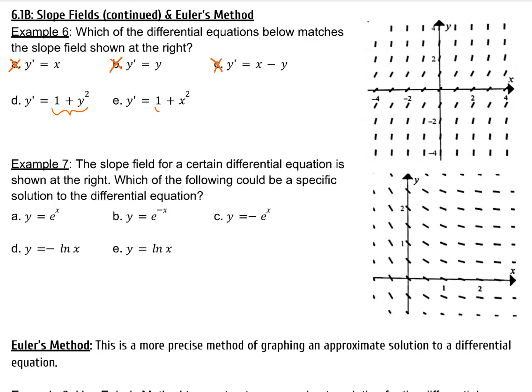So should it be 1 plus y squared or 1 plus x squared? You can pick a value, such as (1, 0), where it looks like the slope is 1. If x is 1 and y is 0, option D would give me a slope of 1, option E would give me a slope of 2. So option D best matches the slope field.